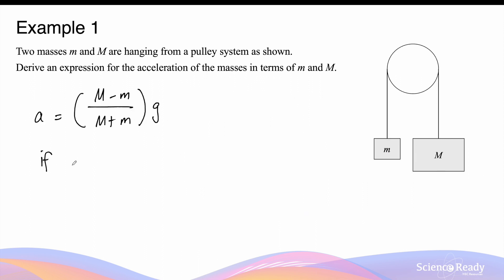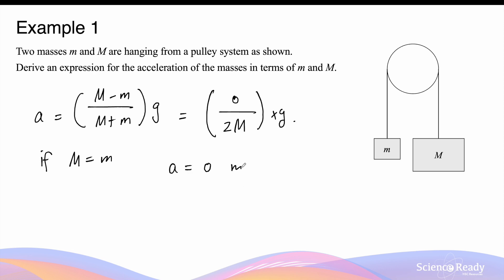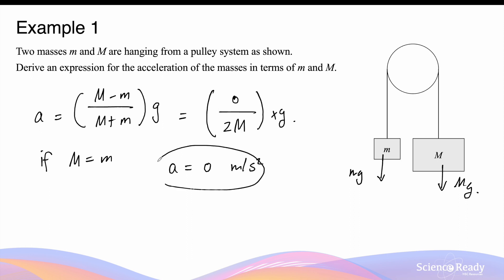Now let's look at a scenario where the masses are equal. If big M equals small m, the numerator becomes zero and the denominator becomes 2M times g, which means the acceleration of the system is 0 meters per second squared. This makes sense because if the two masses are equal, they experience the same magnitude of weight force, so the tensions are also equal, resulting in zero net force. When the net force is zero, the masses are in equilibrium, meaning their velocity will not be changing, hence no acceleration.